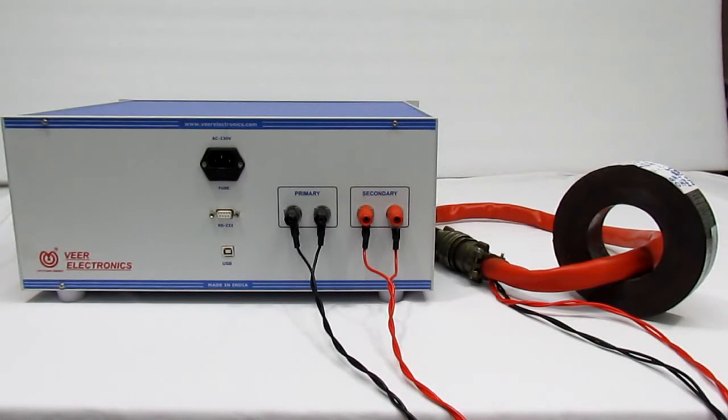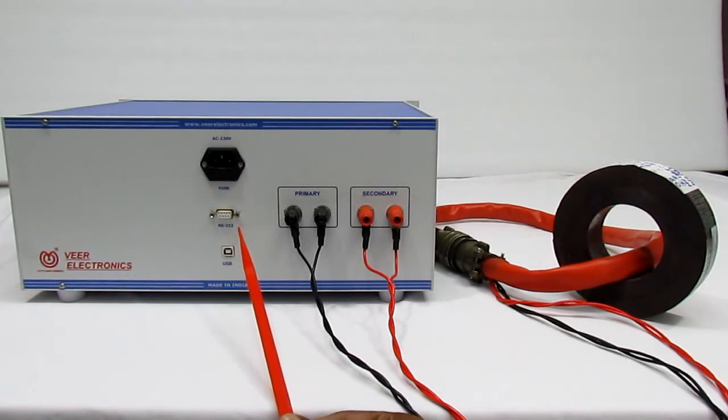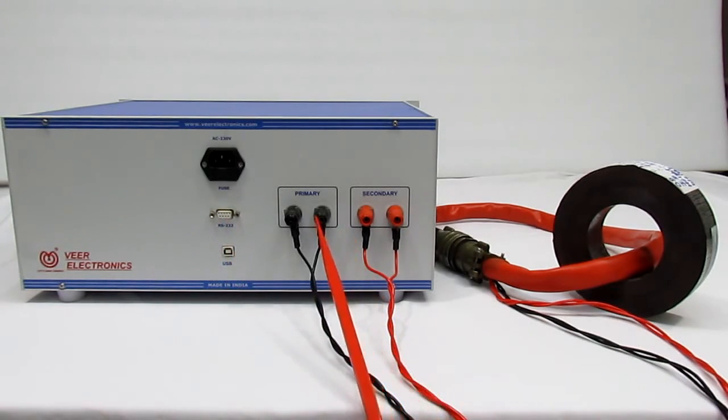This is rear panel of toroidal core tester VCT02. Here you can see AC power supply socket. This is RS232 port and USB port to communicate with computer. These are primary and secondary terminals to connect testing jig. Connect primary black wires of testing jig to primary black terminals, and connect secondary red wires of testing jig to secondary red terminals.